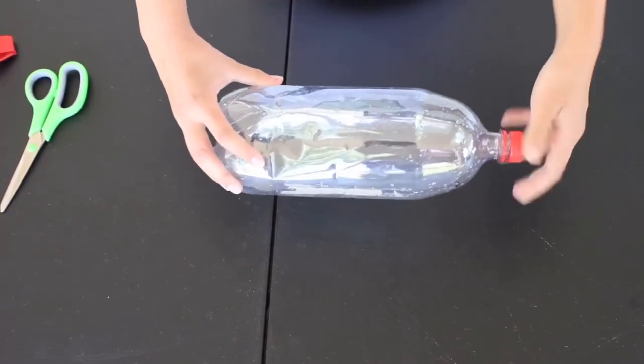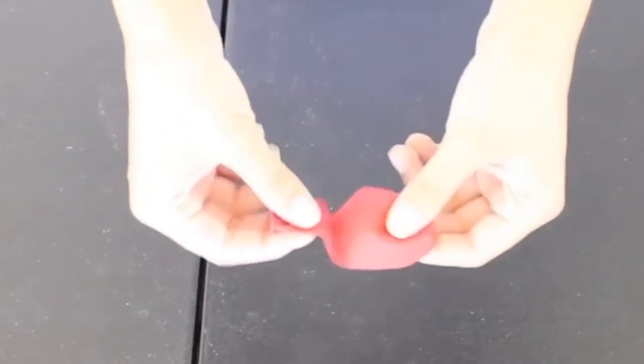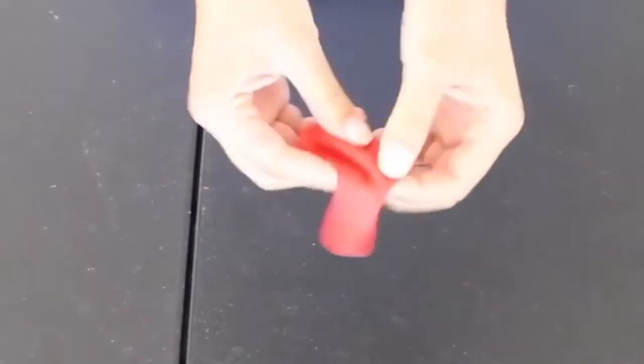If you haven't done so yet, you may now unscrew your bottle. Gather up your following material: your balloon, your roll of duct tape, and scissors.